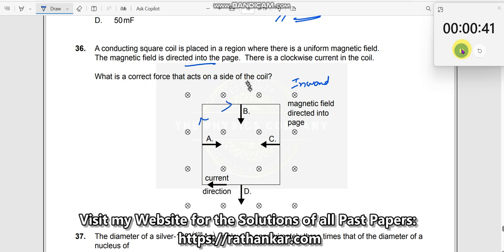What is the correct force that acts on the coil? So if I use my FBA rule, I observe how the force will be acting. Force would be acting in the downward direction. So D is the right answer.